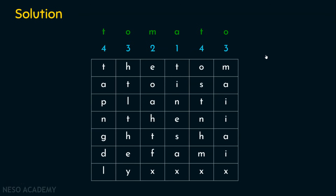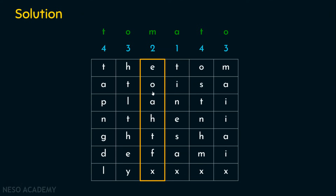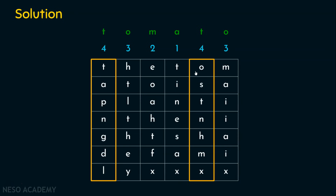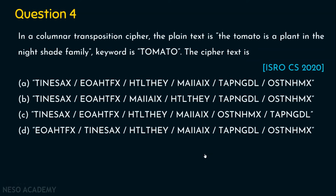We entered the plaintext row-wise and will generate the ciphertext column-wise. The first column (numbered 1) gives: T, I, N, E, S, A, X. Then column number 2: E, O, A, H, T, F, X. Then column number 3: H, T, L, T, H, E, Y. And column number 4 gives M, A, I, I, A, I, X. Writing in this order gives you option A as the right answer.